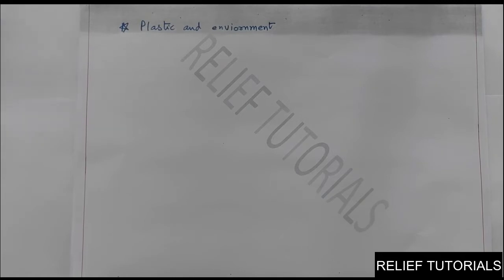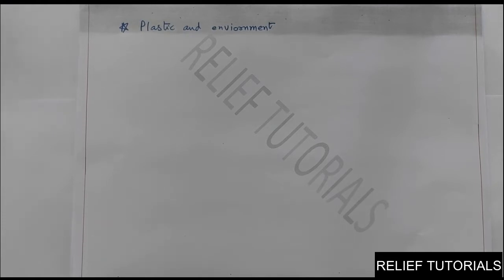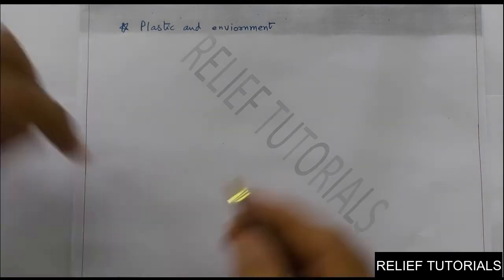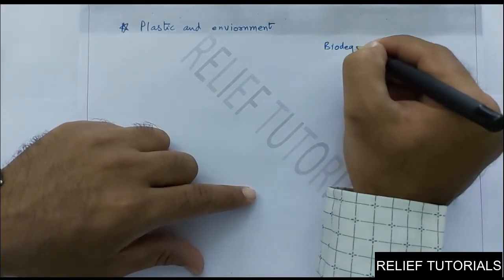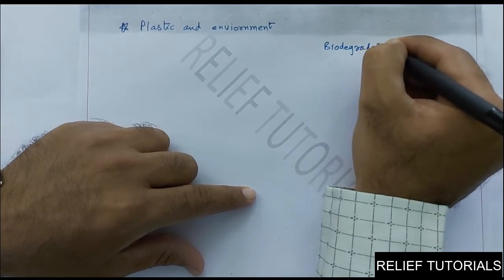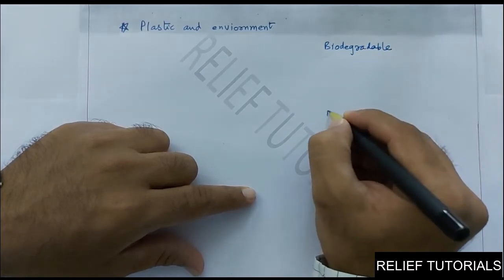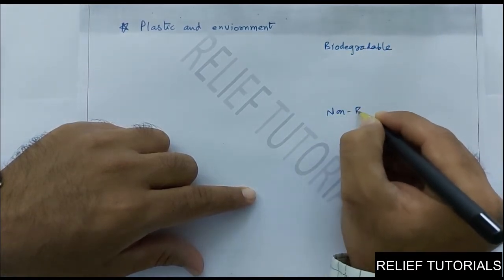Once plastic is used, it is gradually collected into the garbage. Now, how do we dispose of it? It's a very difficult task because plastic is a non-biodegradable substance. So what do we mean by biodegradable and non-biodegradable?